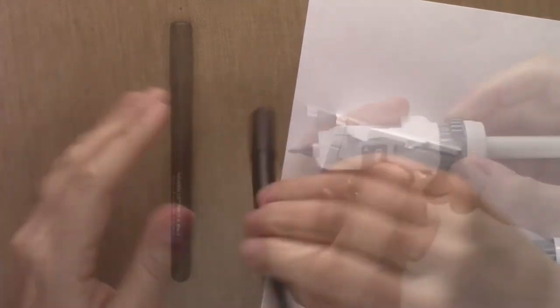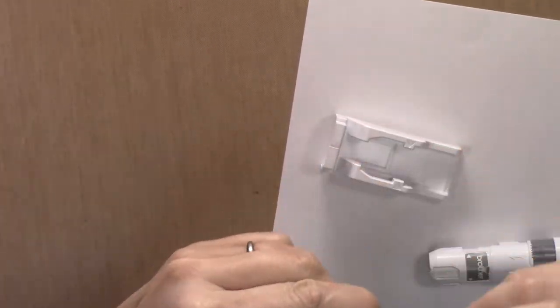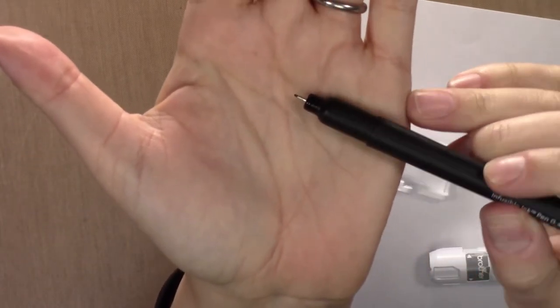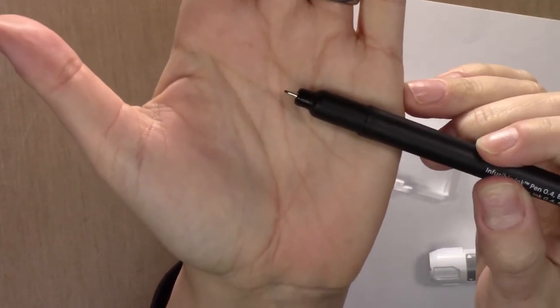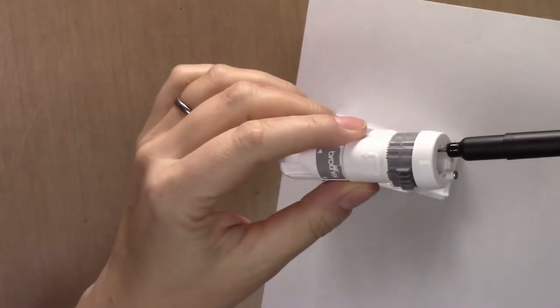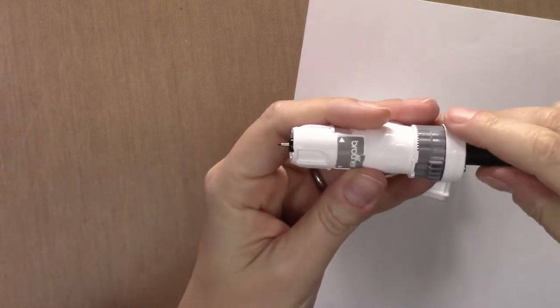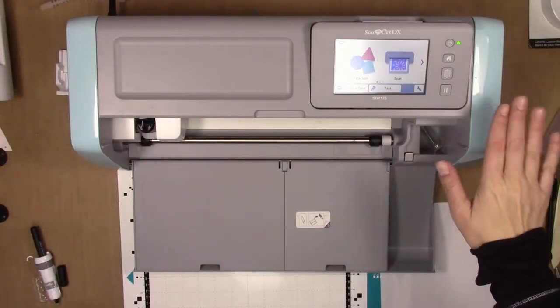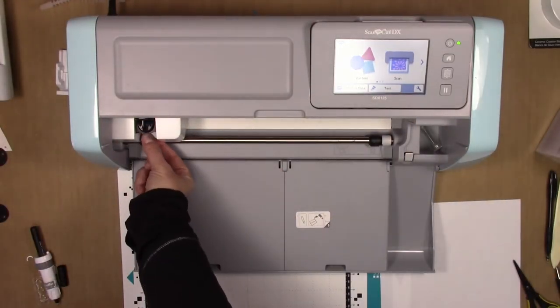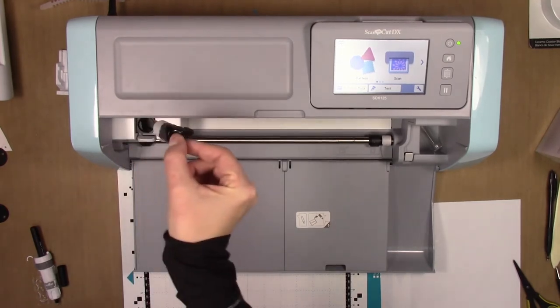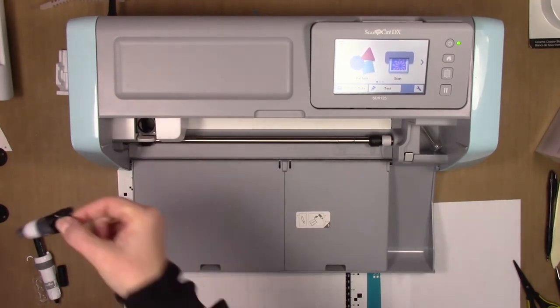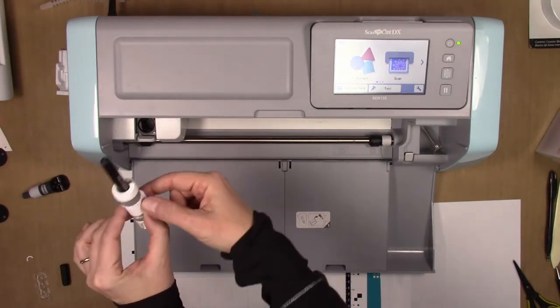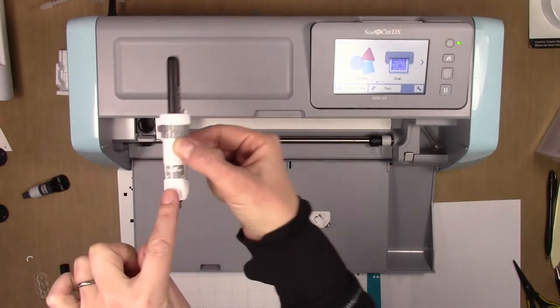We're going to use the 0.4 Cricut Joy black pen today because that is the thinnest pen, the smallest nib I've got, the most detailed pen I've got. This is my Scan and Cut DX. I'm going to unload the regular blade, just pull this up and pull the blade out. Then you put the pen in with the Brother logo facing forward.